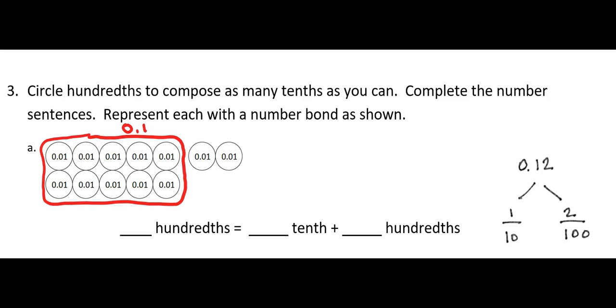Altogether in my picture, I have 12 hundredths, and again, I was able to make 1 tenth, and then I also have 2 more hundredths. So the decimal, 12 hundredths, can be seen as 1 tenth and 2 hundredths.